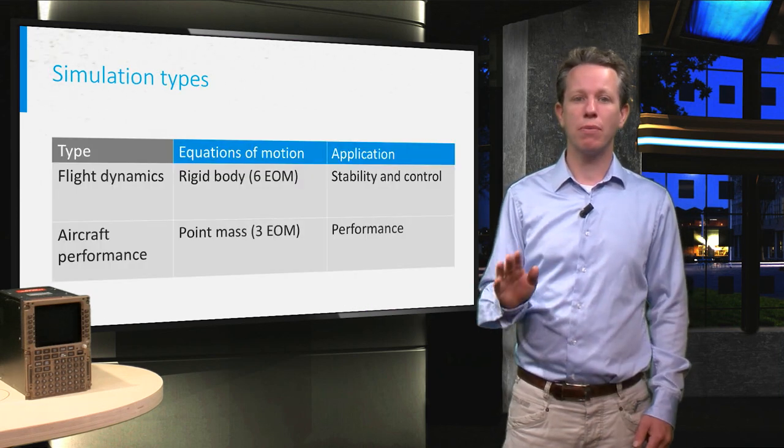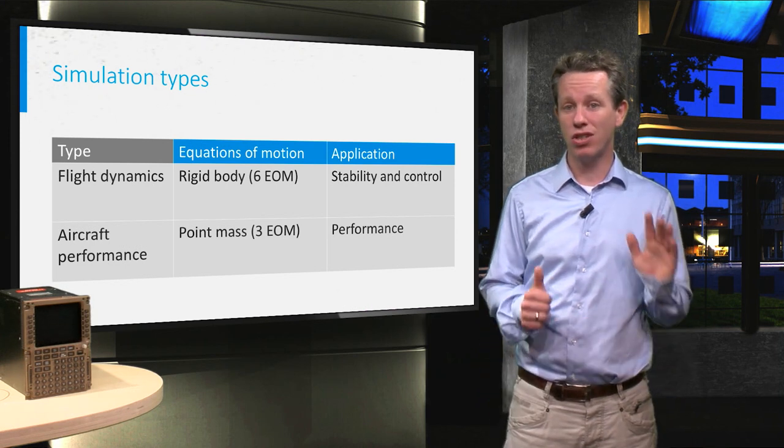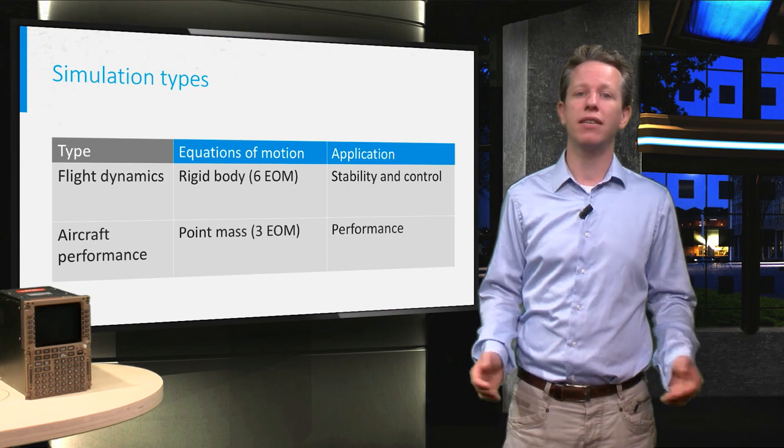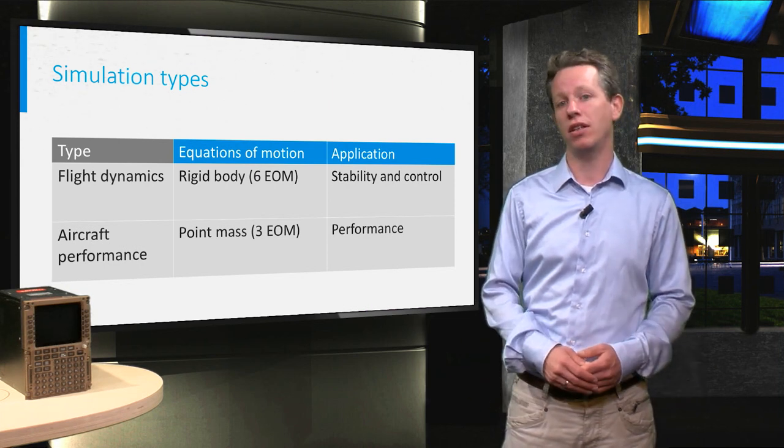In these piloted simulations, the aircraft is represented as a rigid body with inertia, resulting in 6 equations of motion. This is called a flight dynamics model and can be used for stability and controllability calculations.